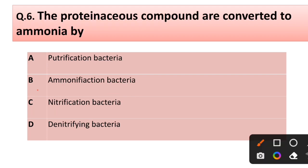Question number six: the proteinous compounds are converted to ammonia by — options: (a) purification bacteria, (b) ammonification bacteria, (c) nitrification bacteria, (d) denitrifying bacteria. Correct answer is option B: ammonification bacteria.